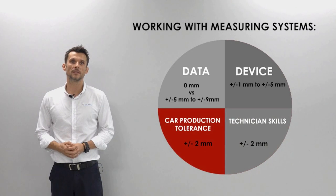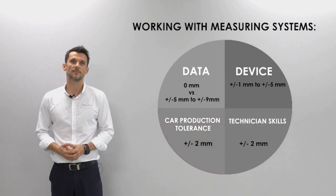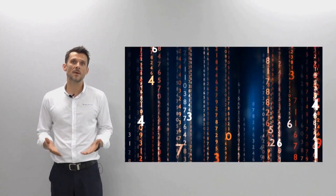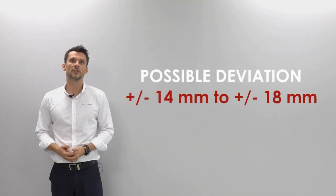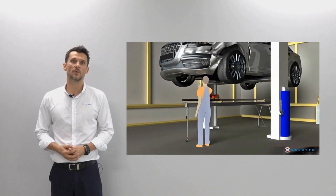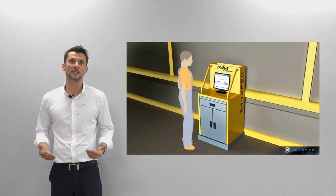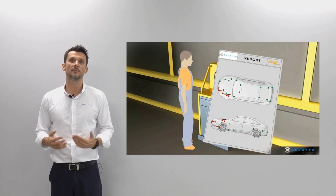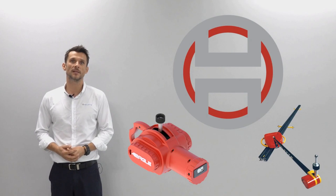And in the fourth quarter it is the production tolerance of the car itself, which is roughly two millimeters. At the end, when we sum up all these millimeters together, we will get a number of about 14 to 18 millimeters. So now you understand that if you work with data created based on OEM 3D CAD drawings, the tolerance is much less compared to data created by collecting information from different sources. So the first thing you need to focus on is reliable data before choosing an electronic measuring system.